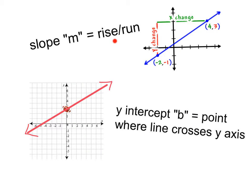Remember, your slope is your rise over run, or your change in Y over your change in X. Your Y intercept is the point where your line crosses the Y axis.